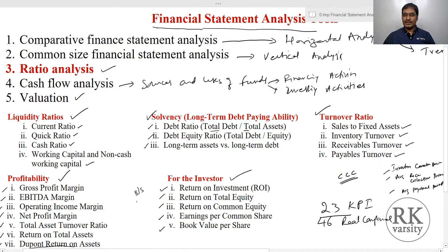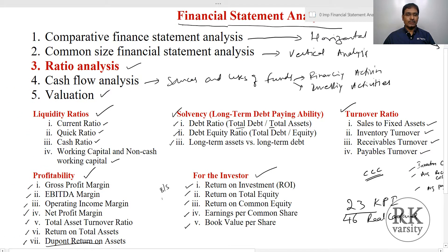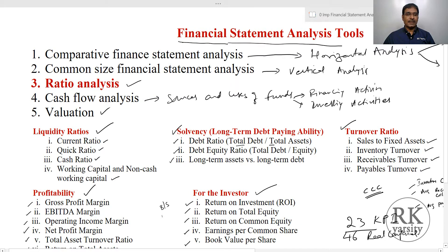All these ratios are explained with the help of annual statements from 46 real companies. In this course, we explain you how to calculate, analyze, and interpret these 23 key performance indicators. Other financial statement analysis tools — like comparative financial statement analysis and common-size financial statement analysis — are covered in a different course using Excel as a tool, where instead of calculating manually, we perform the analysis using Microsoft Excel.